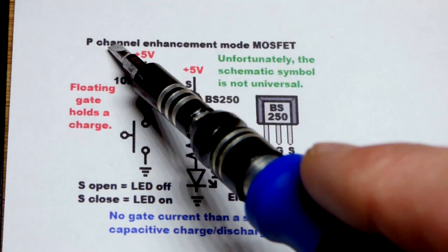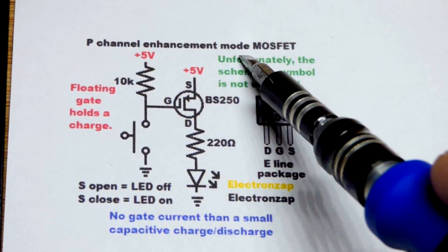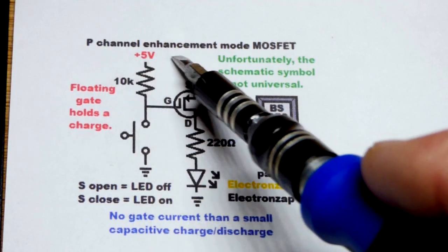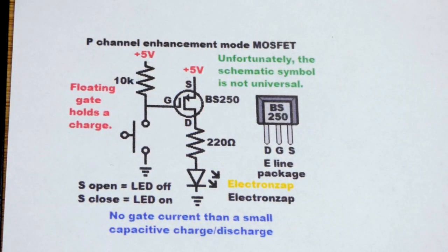MOSFETs also come in N-channel and they also come in depletion mode. But we're going to look at the P-channel enhancement mode MOSFET for this video.